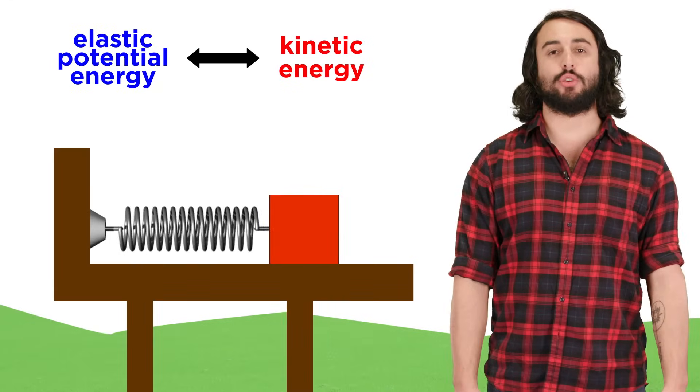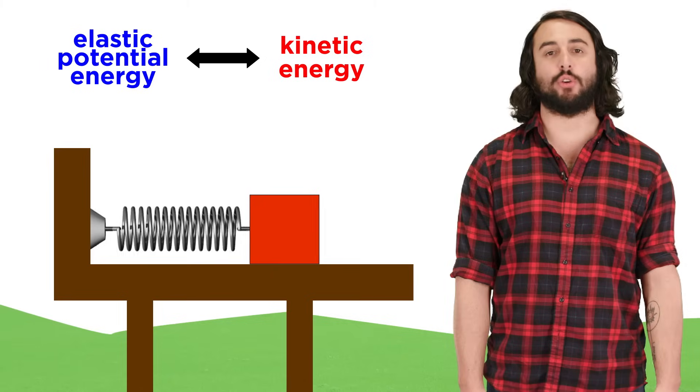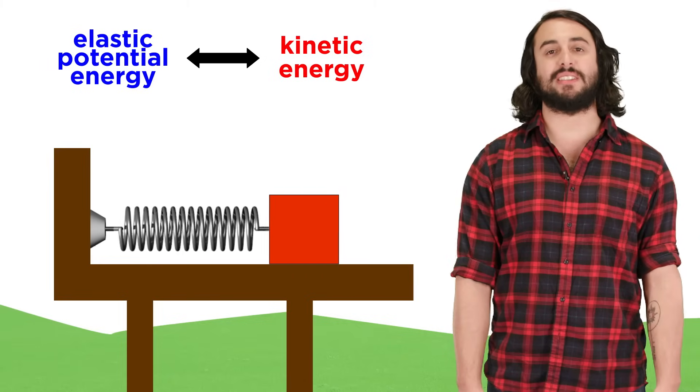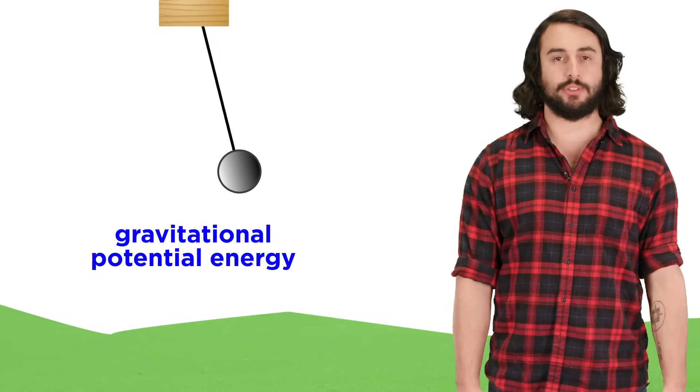This is more easily visualized using the simple harmonic motion of a mass spring system, which utilizes elastic potential energy, but we can also use the pendulum of a grandfather clock, which will use gravitational potential energy.